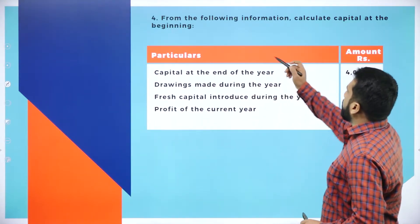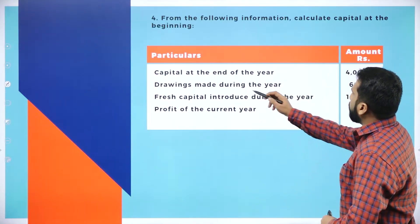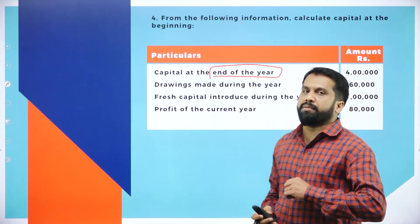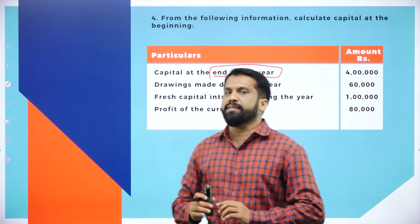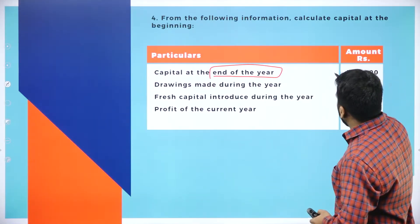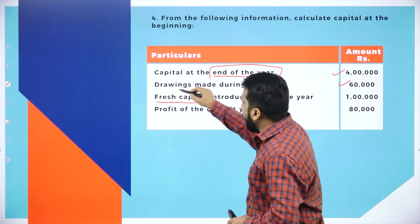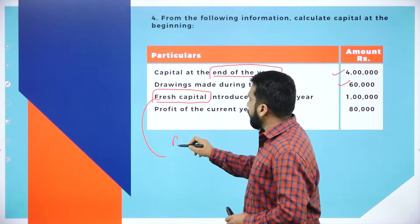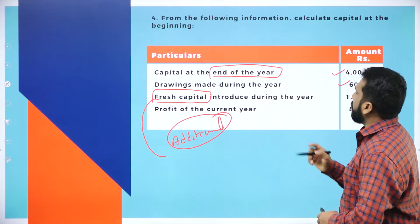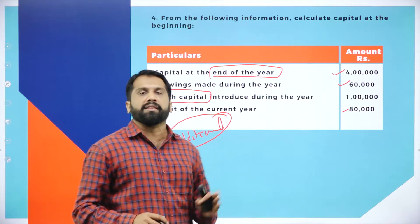The next problem is a small one: from the following information, calculate the capital at the beginning. They have given capital at the end — that is closing capital. Normally they give opening capital and we have to find closing capital, but here closing capital is given and we need to find opening capital. The information includes closing capital, drawings, fresh capital (additional capital), and profit for the current year given directly as 8,000.